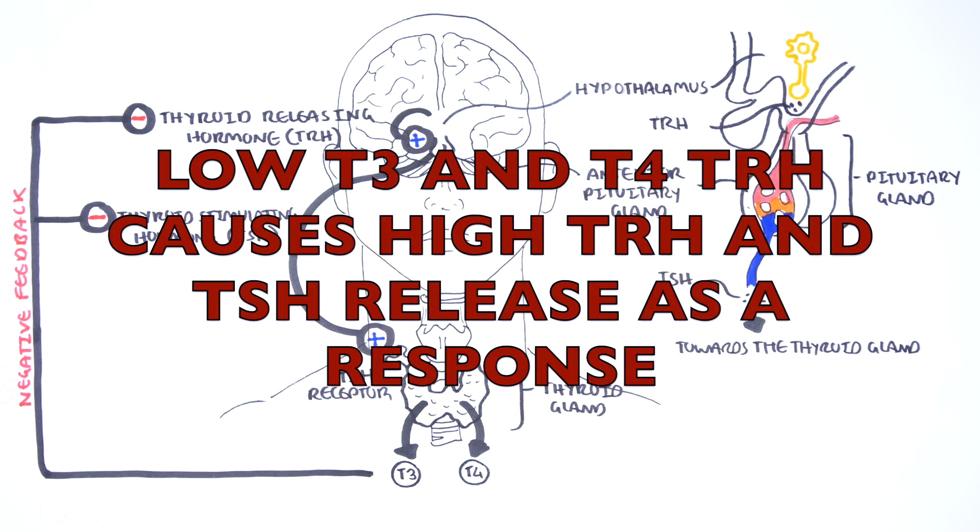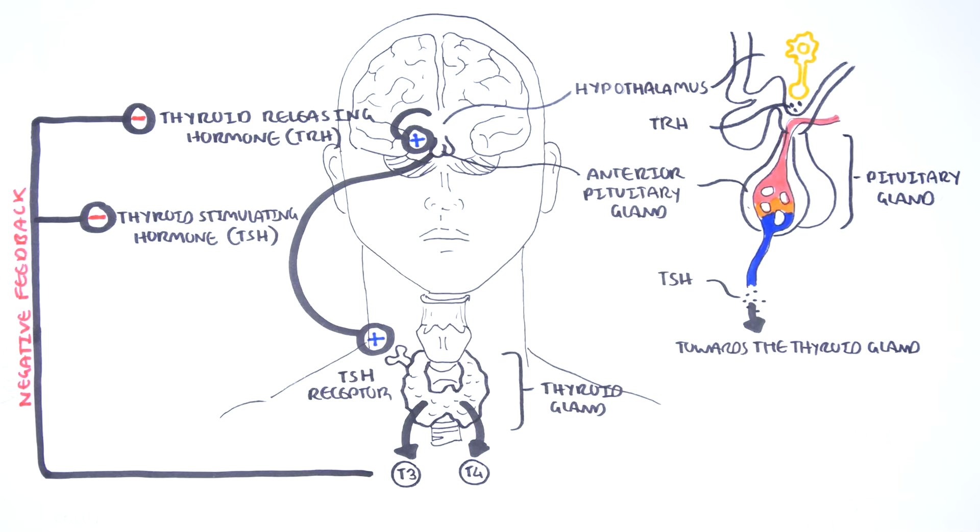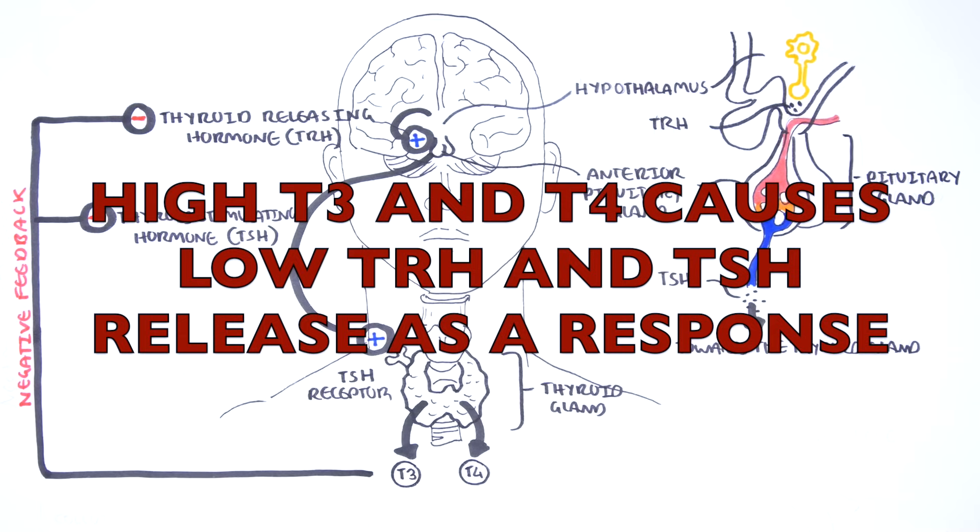Reduction of circulating thyroid hormones T3 and T4 levels due to primary thyroid failure results in increased TRH and TSH levels. Whereas if there are high thyroid hormones, so high T3 and T4, the opposite occurs. You have low TRH and low TSH.